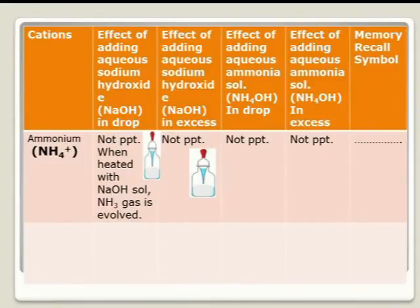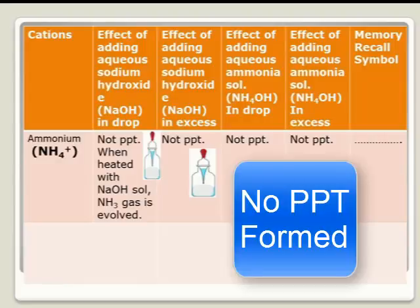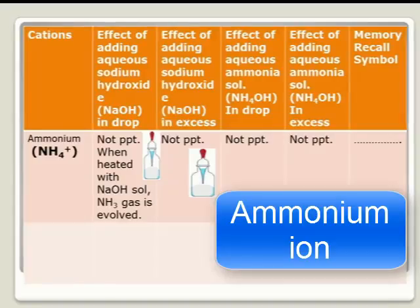The next ion is ammonium ion. This is a very unique reaction because no precipitate is formed with either of the two test reagents. If you carry out a reaction in a test tube, after adding sodium hydroxide in drops and in excess, no precipitate is formed. Then you add ammonium hydroxide, and no precipitate is formed either in drops or in excess. Then the clue is: you suspect ammonium ion.